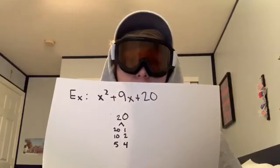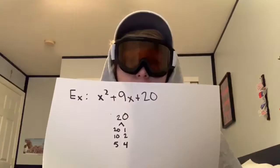20 plus 1 does not equal 9. 10 plus 5 does not equal 9. But 5 plus 4 equals 9. So now all you have to do — the work is pretty much done — you just set it up as (x plus 5) times (x plus 4). And there you go — that's factoring the easy trinomial.